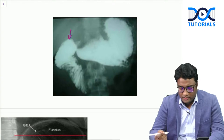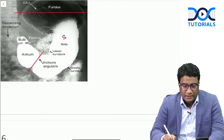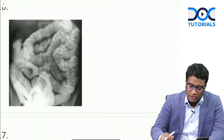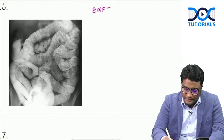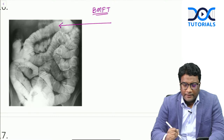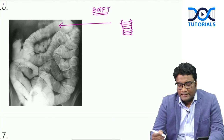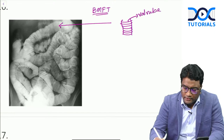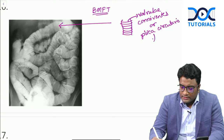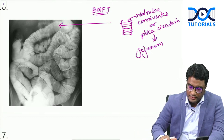There were two questions on barium studies. First: identifying the duodenal bulb - the first part of duodenum on barium meal. On barium meal, you see the stomach, lesser curvature, greater curvature, pyloric antrum, pylorus, and then the duodenal bulb formed by the first part of duodenum. Second: a barium meal follow-through with an arrow asking duodenum or jejunum. When you see valvulae conniventes (plica circularis), this is jejunum. The ileum is featureless, but valvulae conniventes identify the jejunum.